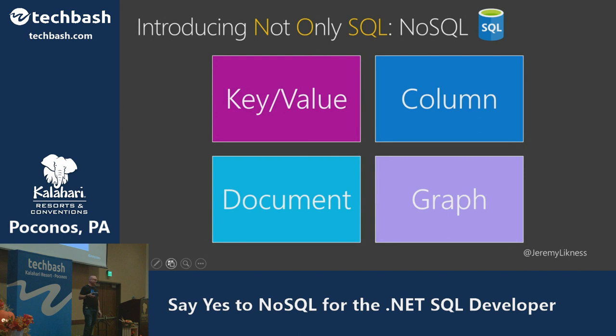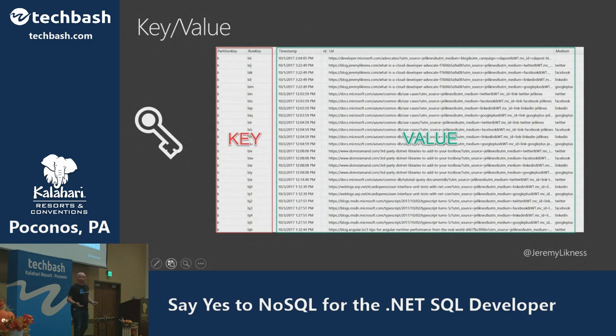The idea of NoSQL is not that there's no SQL allowed — it's 'not only SQL.' It's another toolkit to add to your box. There are dozens of types of non-relational databases; the four most common are key-value, column, document, and graph.